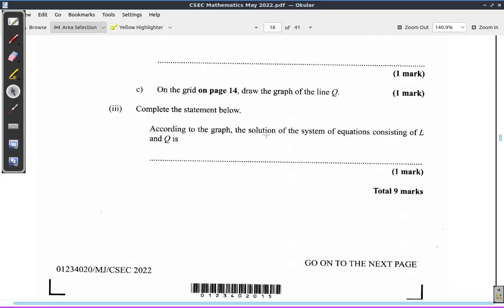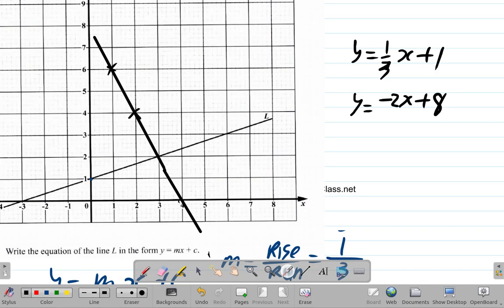What they ask is the solution of the system of equations. The solution is the point where the lines intersect each other. What is the solution for that system of equations?